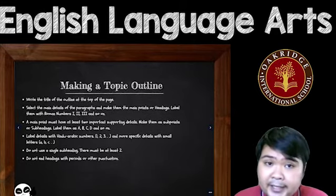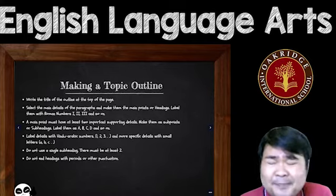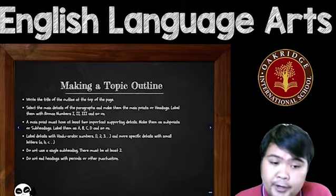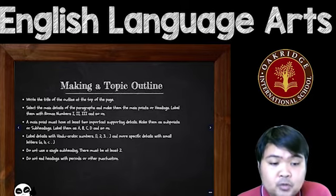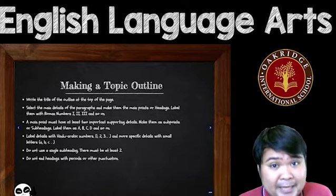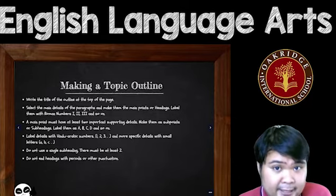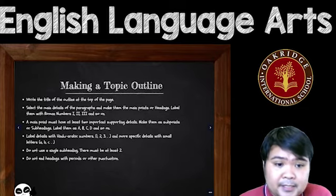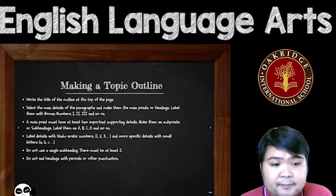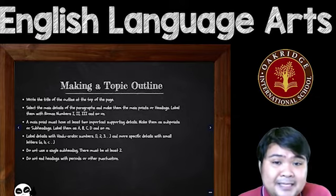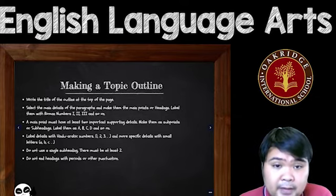There should be at least two — meaning two or more — subheadings to support the details, so make sure you put at least A and B for each heading. Next, label details with Hindu-Arabic numbers 1, 2, 3, and so on. If you'd like to go even more specific, you could add A, B, C under each of those numbers. So for example, under number one you could go A, B, and C.